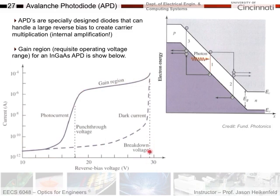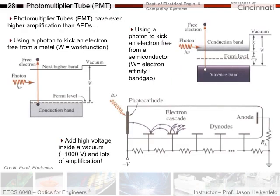Of course, if you put too much voltage on an APD, it'll break — you can see the breakdown region on the IV curve, where even the dark current (reverse saturation current with no light) eventually leads to breakdown. When you shine light on it, you can see the photocurrent being generated. If you really need to measure a tiny amount of light, then you need a photomultiplier tube, which has even higher amplification than APDs.